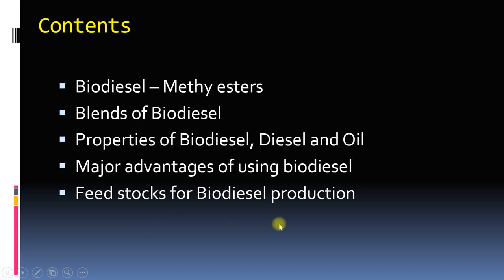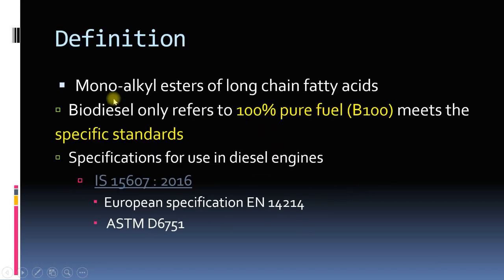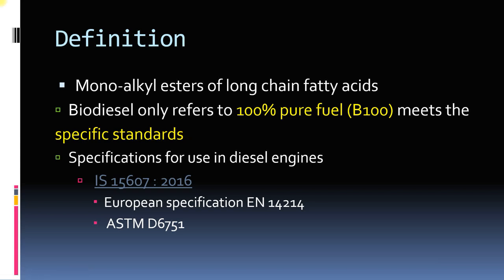What are the different feedstocks for biodiesel production? Biodiesel is defined as monoalkyl esters of long-chain fatty acids, and it refers only to 100% pure biodiesel — B100 — that means 100 percent biodiesel which meets a set of specific motor standards. These standards are different for different countries; the Indian standard is IS 15607:2016.